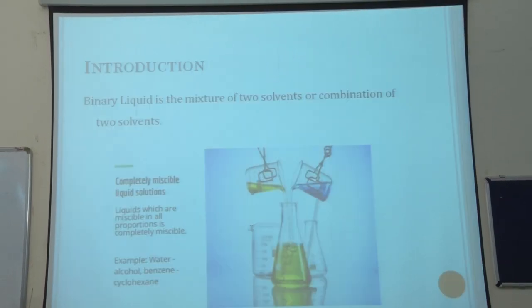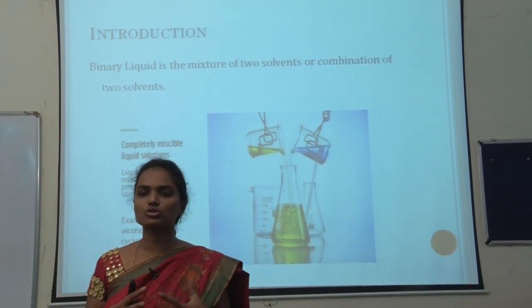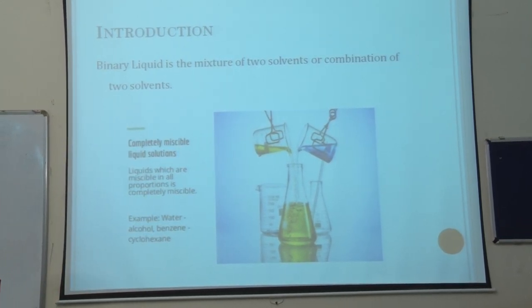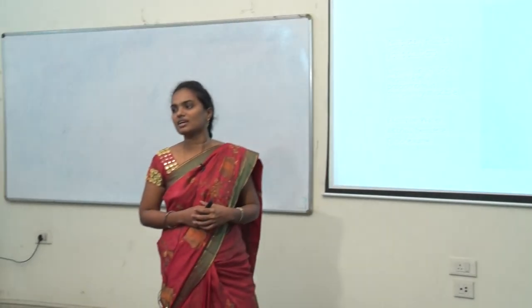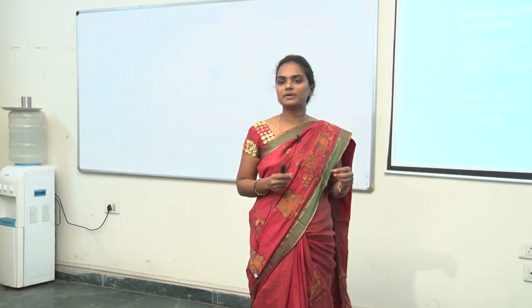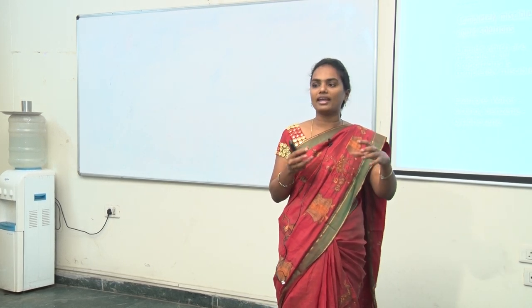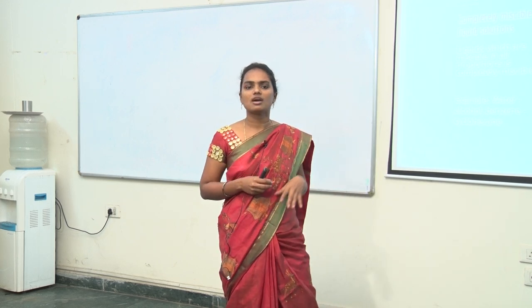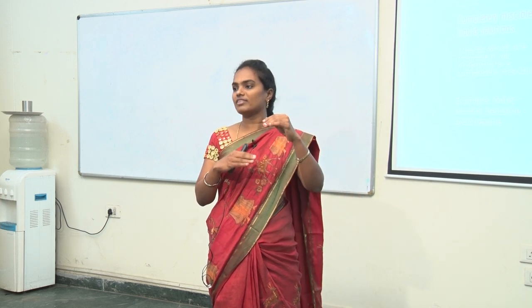As you all know, binary liquid is the combination of two liquids, that is especially two solvents. Here I consider completely miscible solvents. There are other two types also — partially miscible and completely immiscible. Completely miscible means one solvent is soluble in another solvent completely in all proportions. For example, if you take water and methanol, there is no separation of layer between them — that is completely miscible.